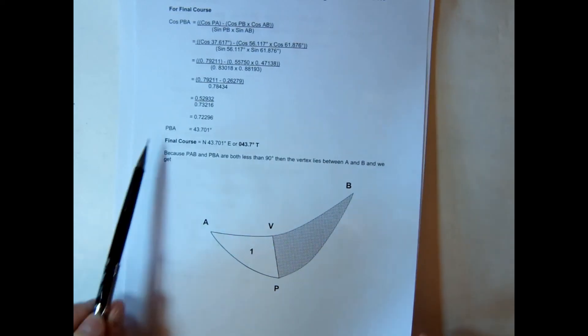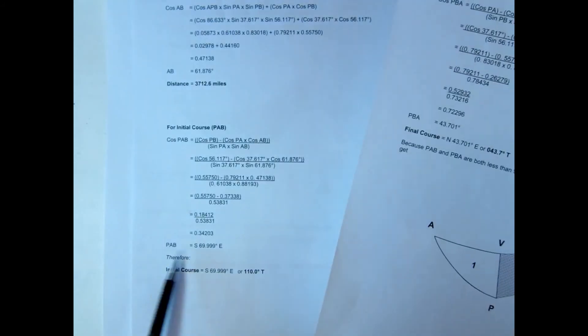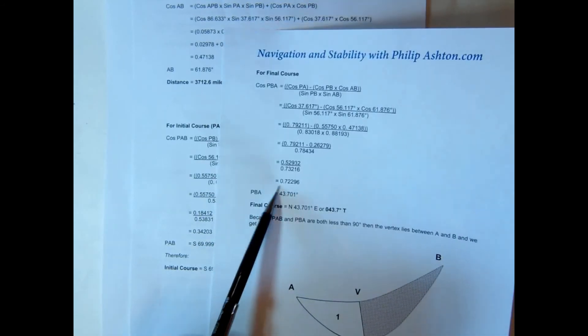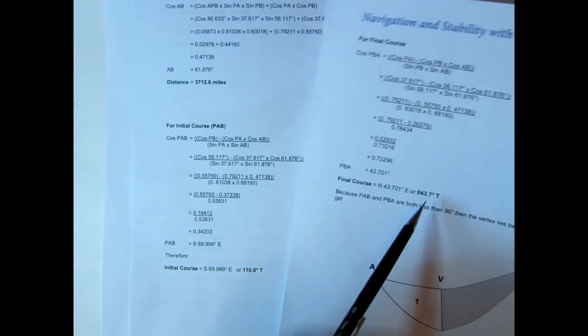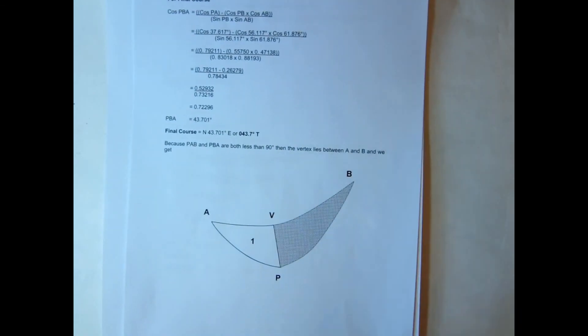So when you do the calculations, if the value PBA and PAB, in other words this value here and this value, if they are less than 90 both of them, the vertex must lie between A and B.